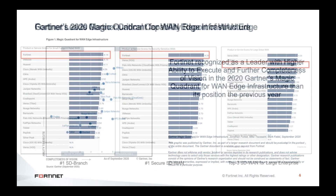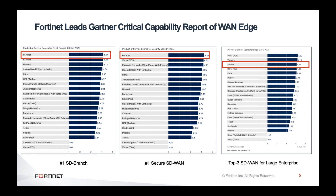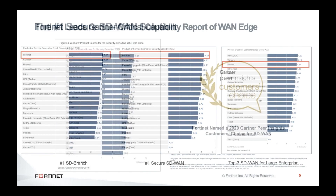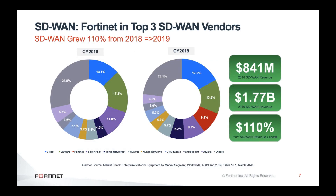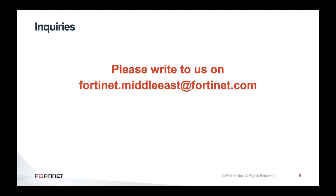When talking about Secure SD-WAN, players include Cisco and Palo Alto — and to be clear, that refers to Palo Alto's acquisition of CloudGenix, not Palo Alto's own native product. We are very proud to be a leader with a product built and developed entirely by our own engineers. Looking at Gartner-recognized capabilities, we are a leader from SD-Branch to Secure SD-WAN, and ranked top three for SD-WAN for large enterprises. We are also named a Gartner 2020 Peer Insights Customers' Choice for SD-WAN.